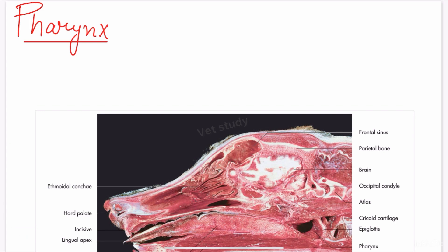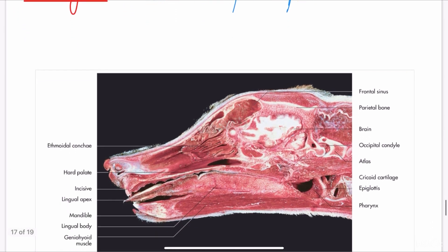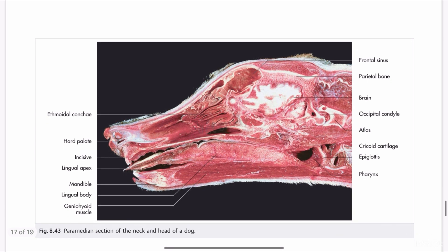What is the pharynx? The pharynx is a funnel-shaped space. It is present at the base of the cranial cavity and behind the posterior nasal aperture. As you can see, the brain is present in the cranial cavity, and the pharynx is present below the cranial cavity.